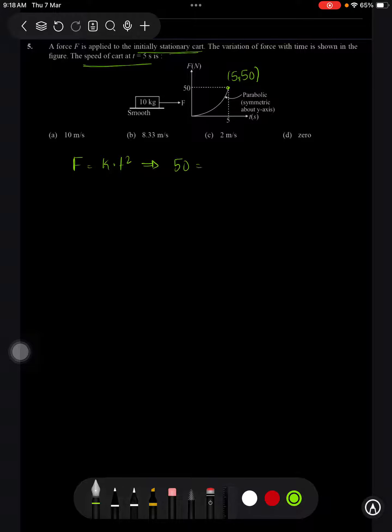Substituting that point I will be getting 50 equals k times 5 squared which is 25. Or I can say that the k value is 2. So the force equation is going to be 2t squared.